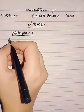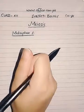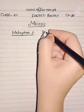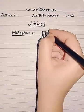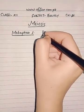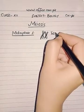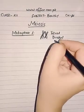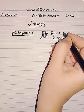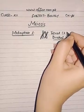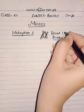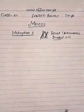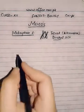In prophase, the tetrads or bivalents are formed, which means two homologous chromosomes are now joined. A bivalent means two chromosomes and a tetrad means four chromatids. In metaphase one, the nuclear membrane will disappear.